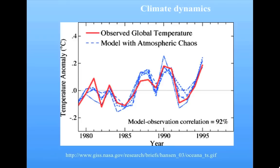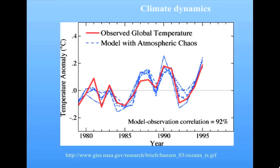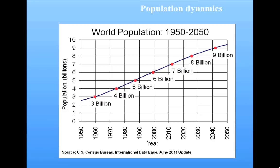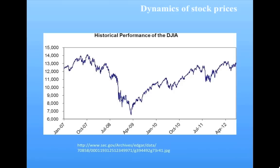Electrical dynamics studies the flow of electricity in circuits. Climate dynamics looks at how climate changes over time in terms of temperature, pressure, and so on. Crowd dynamics looks at how crowds of people act, either in an ordered or disordered way — for example, when someone calls fire in a crowded room, people might stampede. Population dynamics looks at how populations vary over time. We'll be talking about that quite a bit in this unit. Financial dynamics looks at phenomena related to stock prices or other financial activities.